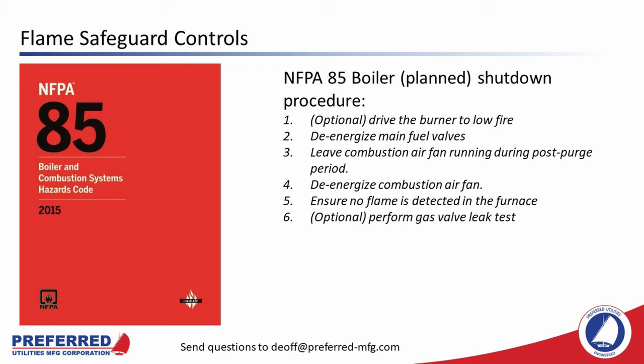A planned boiler shutdown can be performed if the boiler water level goes below the first low-water cutout switch, or if the steam pressure goes above the first operating steam pressure or hot-water temperature switch. The planned shutdown procedure as dictated by NFPA 85: first — optionally — drive the burner to low fire. Then the flame safeguard controller will de-energize the main fuel valves and leave the combustion air fan running for usually 25 seconds for post-purge — though on some controllers the post-purge timing is adjustable. Then it de-energizes the combustion air fan, ensures no flame is detected, and may perform a gas valve leak test. This optional low-fire step is called Assured Low Fire Cutoff — it reduces thermal shock on the boiler.